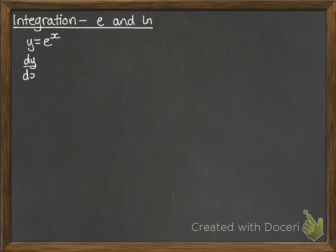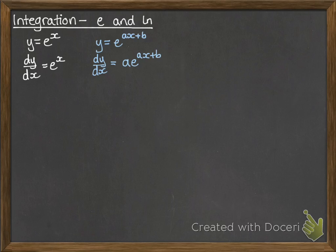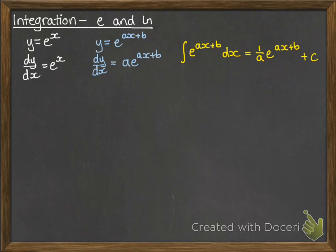Remember from before, if you're differentiating e to the x, you just get e to the x. And the more general form, e to the ax plus b, differentiates to a·e to the ax plus b. You can use the chain rule to check that out, but you should remember that one. So working backwards from that, if we wanted to integrate e to the ax plus b, we would have to multiply by a factor of a, which was the derivative of that e to the ax plus b.